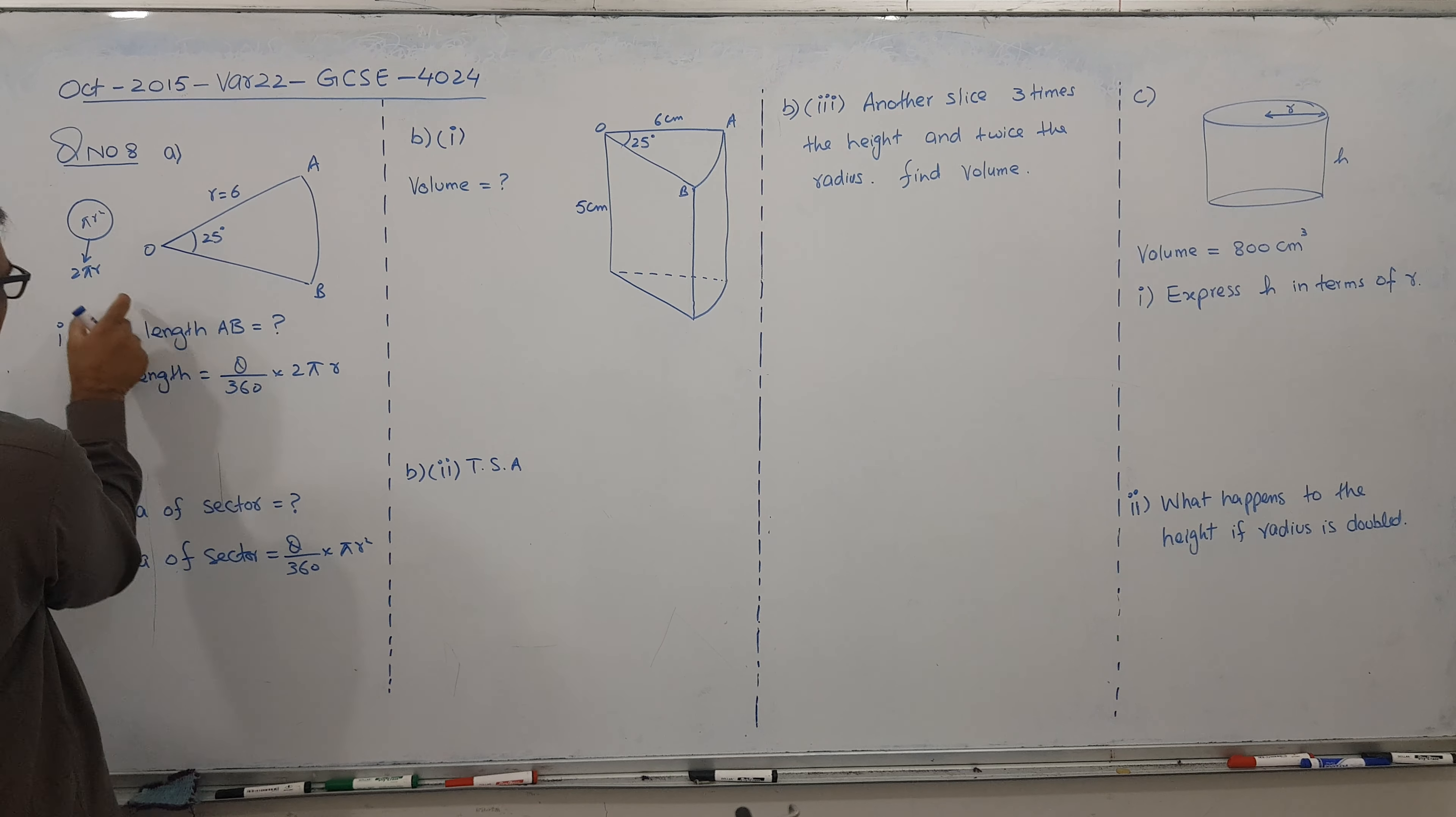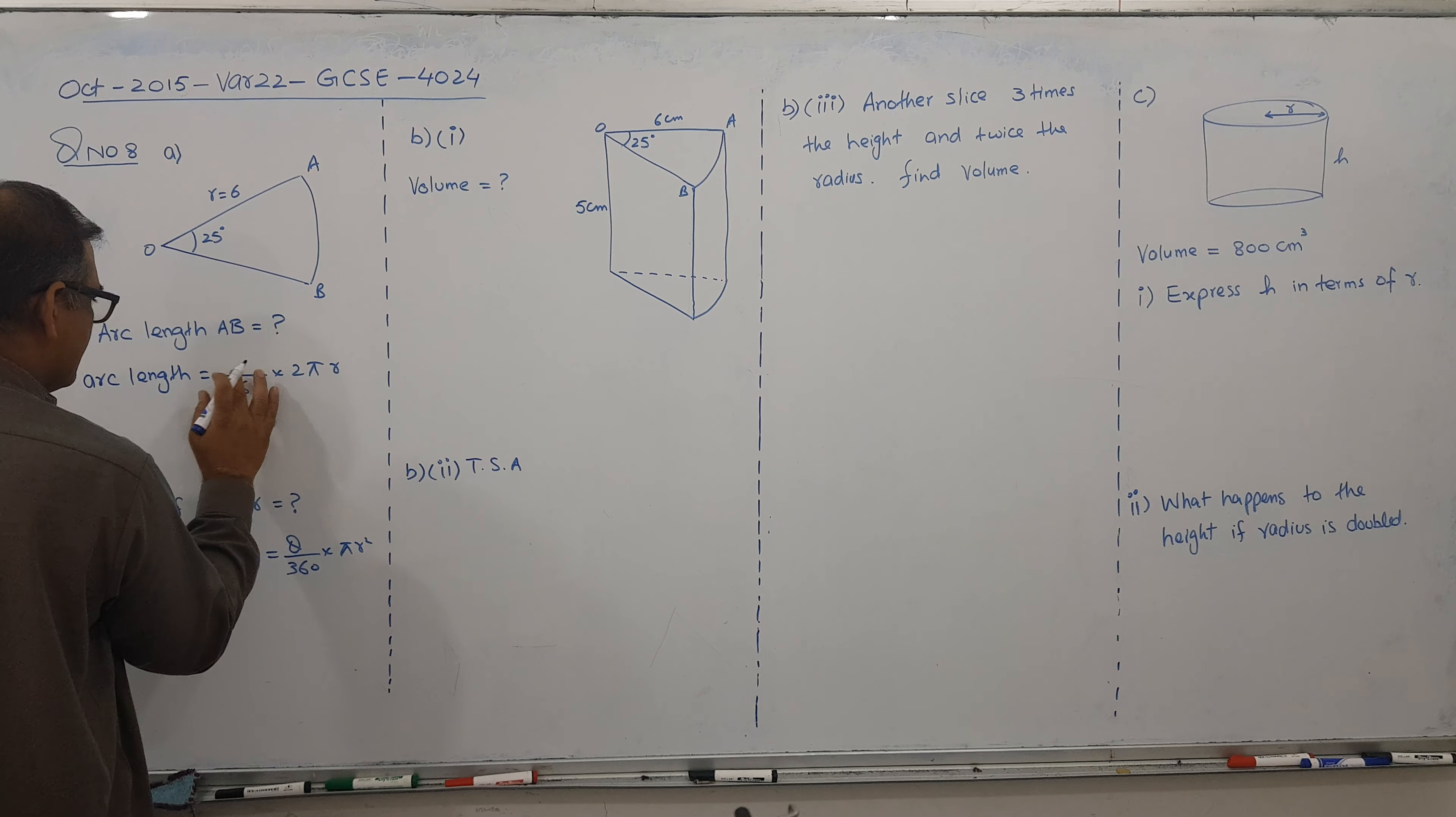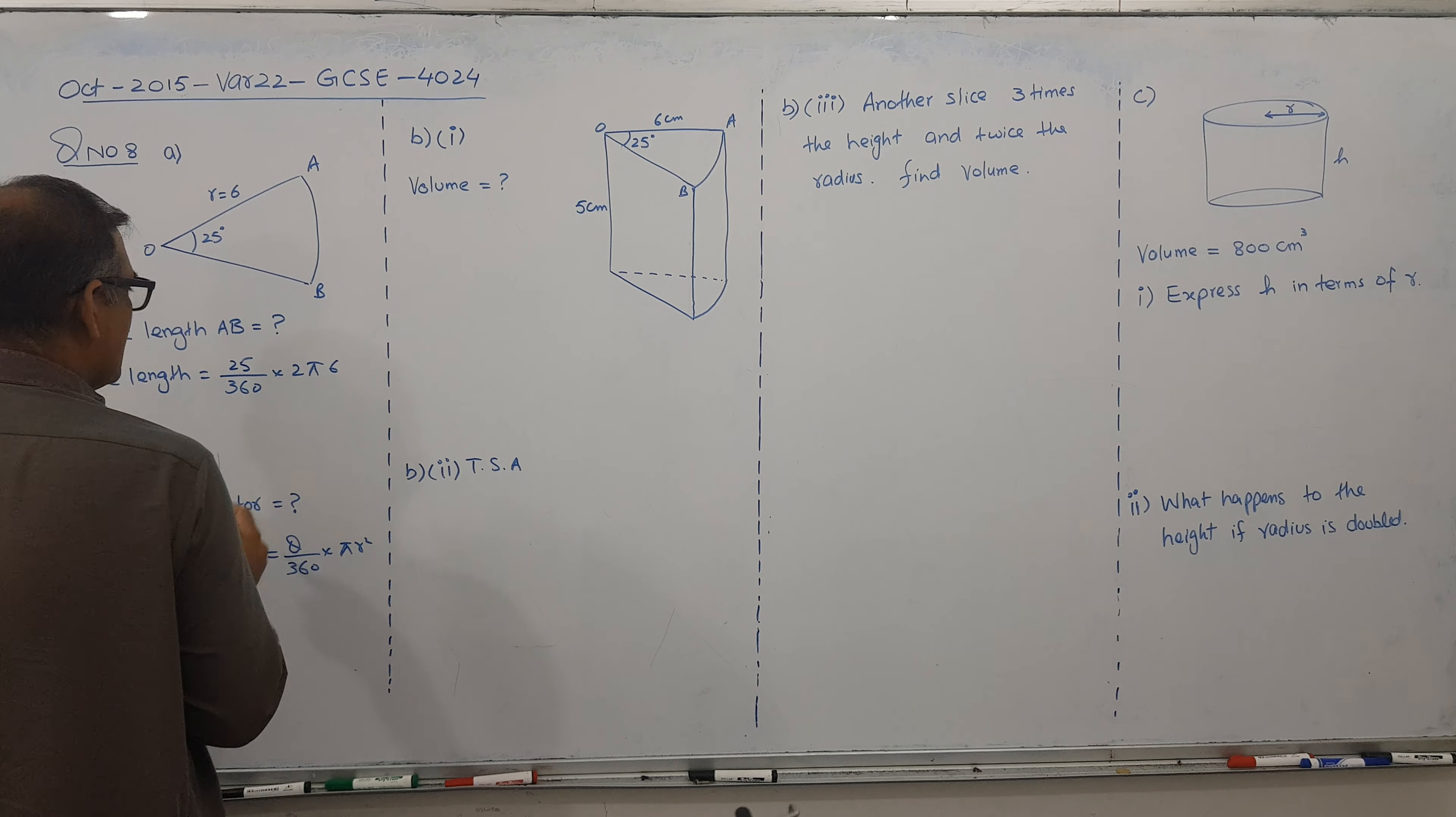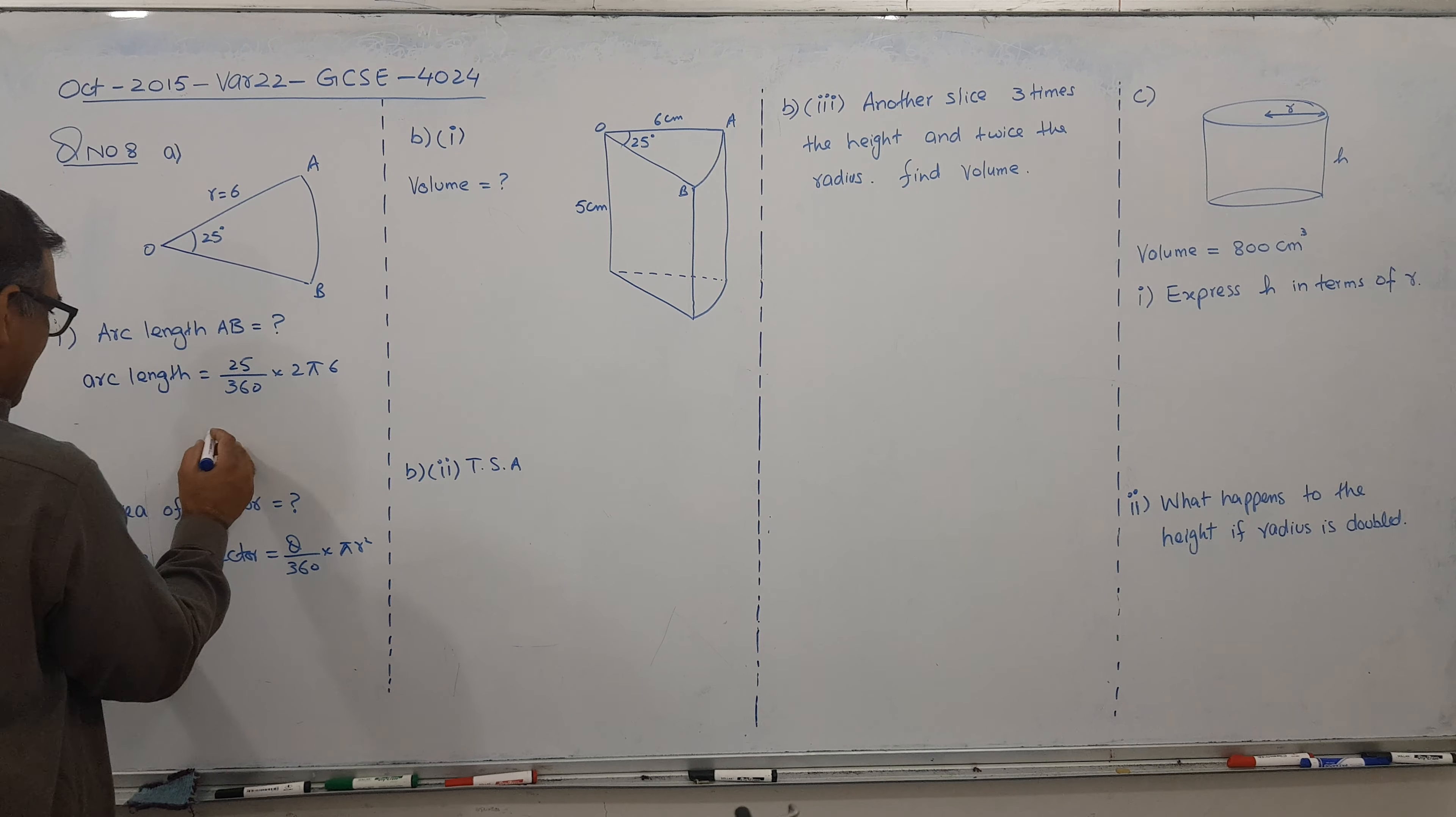That is why you see 2 pi r came and pi r squared. So let's start. Put the values only. Theta is 25. Radius is 6. So let's check. 25 by 360 times 2 times 12. And it is coming 5 by 6 pi.